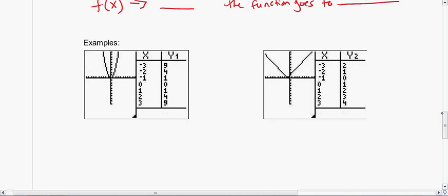Just remember that when we're describing end behavior, we're describing the range. The first part describes the domain as x goes to whatever. The second part describes the range. What's happening to the y values? What's happening to the height of the graph? So as x goes to positive infinity in our first example, if we're reading in this direction, my y values are getting bigger and bigger. So f(x) also goes to positive infinity.